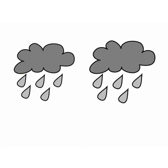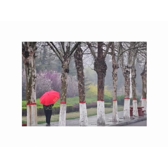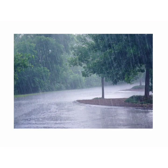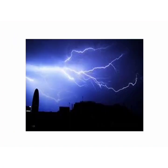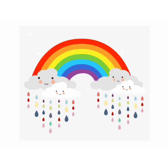We see grey clouds in the sky. Sometimes it drizzles, means there is little rainfall. Sometimes it rains heavily, means it pours. We hear thunder and see lightning in the sky.